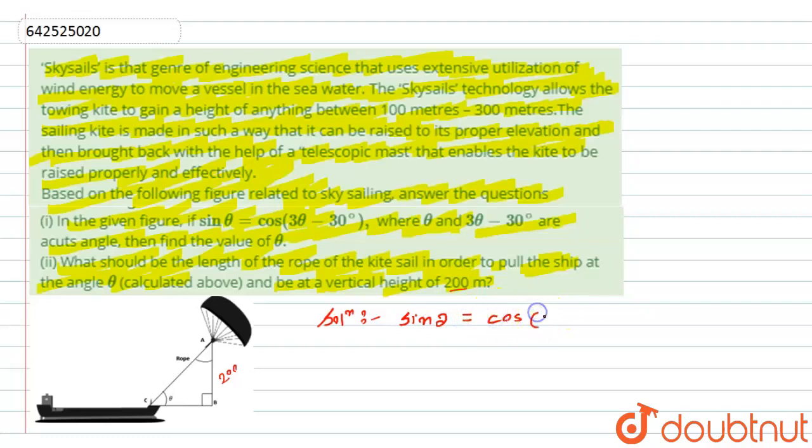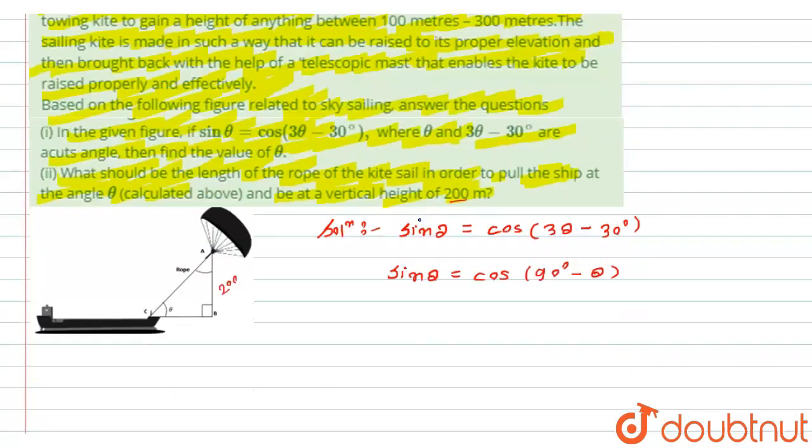For the first question, we are given that sin θ is equal to cos(3θ - 30°), and we need to calculate the value of θ. As we know, sin θ is equal to cos(90° - θ), which equals cos(3θ - 30°). Now I will compare the angles.